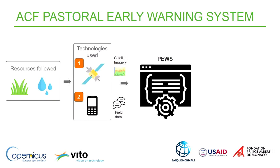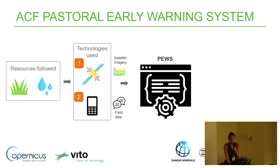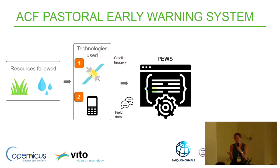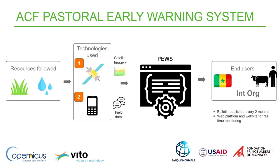The pastoral early warning system follows two main resources — grass (pasture) and water — using two technologies: satellite imagery and data collection with SMS. Every ten days we acquire new satellite imagery that are incorporated into our systems, and every week we do a field survey to collect field data. We then analyze and summarize all this information and transmit it to our end users, which are the states, international organizations, and pastoral communities.